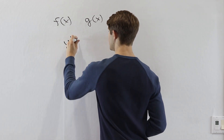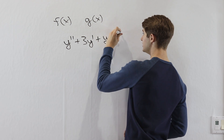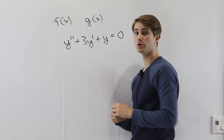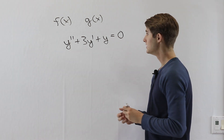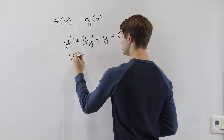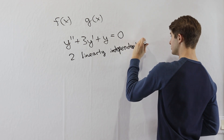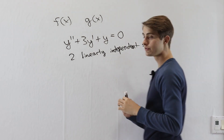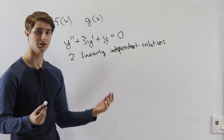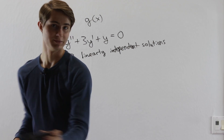For example, if we have y double prime plus 3y prime plus y equals zero, this is a homogeneous differential equation and it is second order. What that means is that, because of this double prime, it must have two linearly independent solutions. So the goal of the Wronskian determinant is that once we get our solutions, we want to check that they are linearly independent like we want them to be.